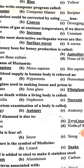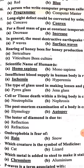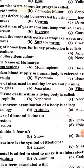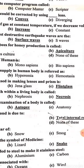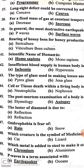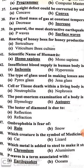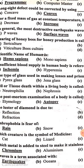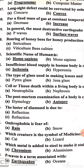In general, the most destructive earthquake waves are the surface waves. Rearing of honey bees for honey production is called apiculture. The scientific name of humans is Homo sapiens.